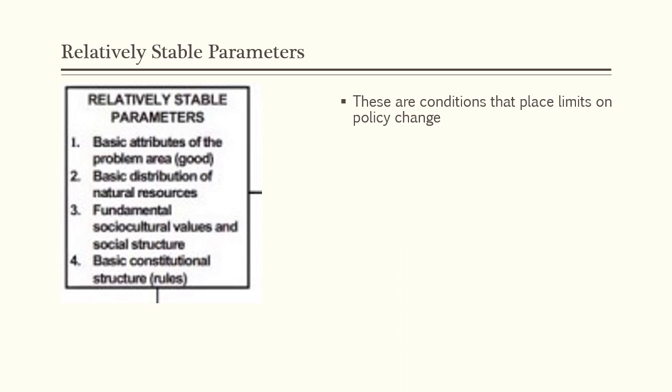Another key component of the Advocacy Coalition Framework is a group of factors the framework labels as relatively stable parameters. Basically, these are things that act as a brake or restriction on rapid policy change. So long as these factors remain relatively stable, major changes in government decisions will be hard to achieve, even if there are coalitions in a subsystem desperately trying to create big policy changes. These relatively stable parameters include things like the basic attributes of the problem area. In terms of housing policy in California, one barrier that advocates for policy change face is that housing in California has been expensive for decades.